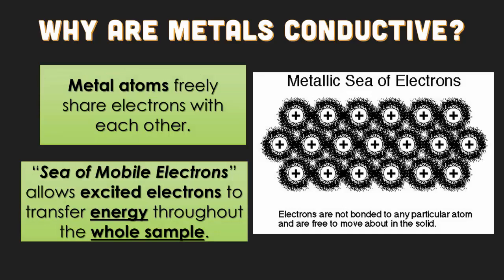Why are metals really conductive? Metal atoms will actually freely share electrons with each other. They have what we call a sea of mobile electrons, which allows those excited electrons to transfer energy throughout the entire sample. The electrons are not bonded to any particular atom and are free to move around in the solid. So if you were to add a charge to the far right-hand side, the electrons on the far left-hand side would either be attracted or repelled to that charge — that's what we call a current. Or if you were to heat up the left-hand side, the heat would travel all the way to the right-hand side until the entire sample is uniform in temperature.